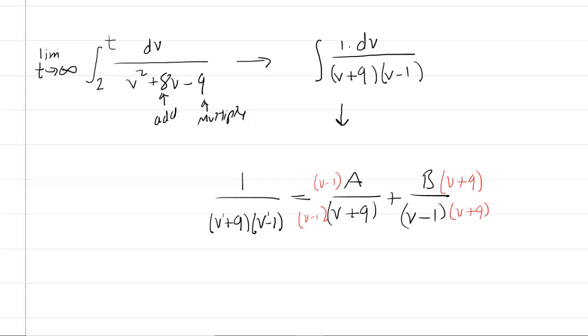Now, once you establish the common denominator, it's easiest to just go ahead and cancel out the common denominator. And that way, we can set the numerator as equal. So we have 1 is equal to v minus 1 multiplied by A plus B times v plus 9.